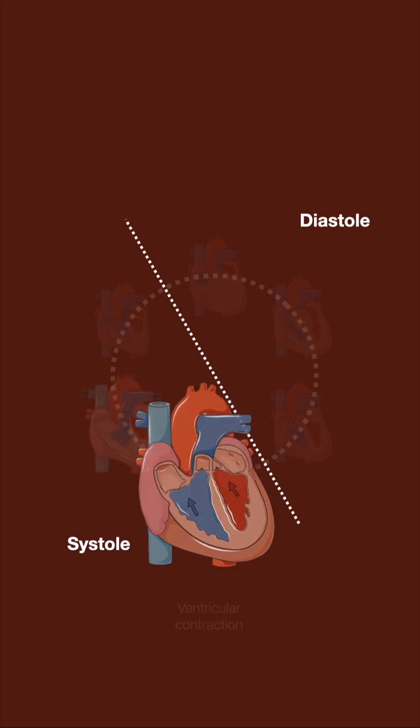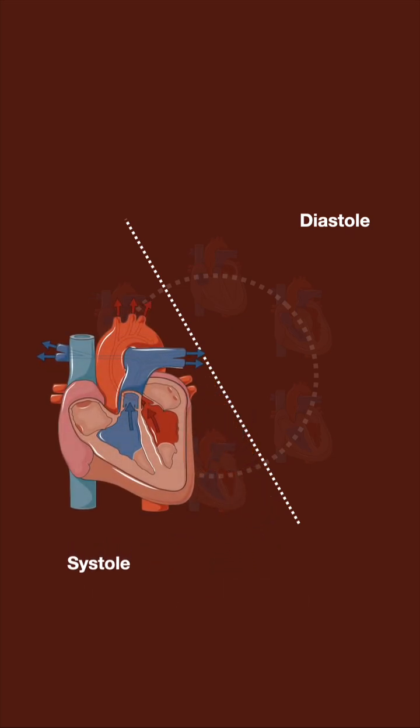When ventricular pressure exceeds that of the aorta and pulmonary artery, the semilunar valves open and blood is ejected into the aorta and pulmonary artery.